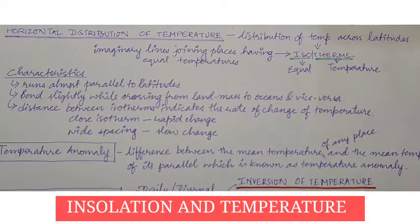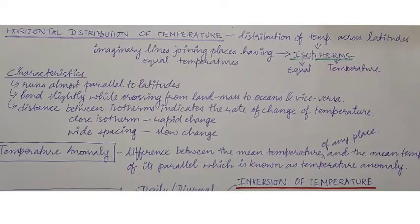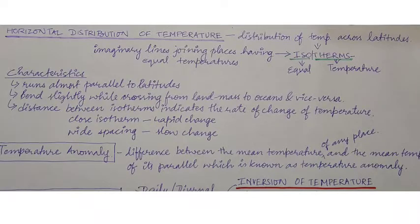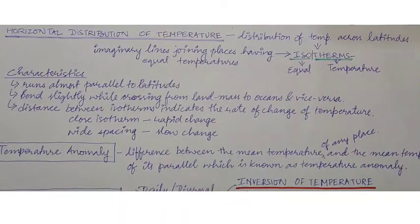Hello students, welcome to my YouTube channel. We are going to continue with the chapter on insolation and temperature. This video will be the last and final part for this chapter. In the previous video I had discussed the insolation heat budget, factors affecting temperature, factors affecting insolation, heating and cooling of the atmosphere, and different processes related to it. Today we are going to discuss various topics, starting with the horizontal distribution of temperature.